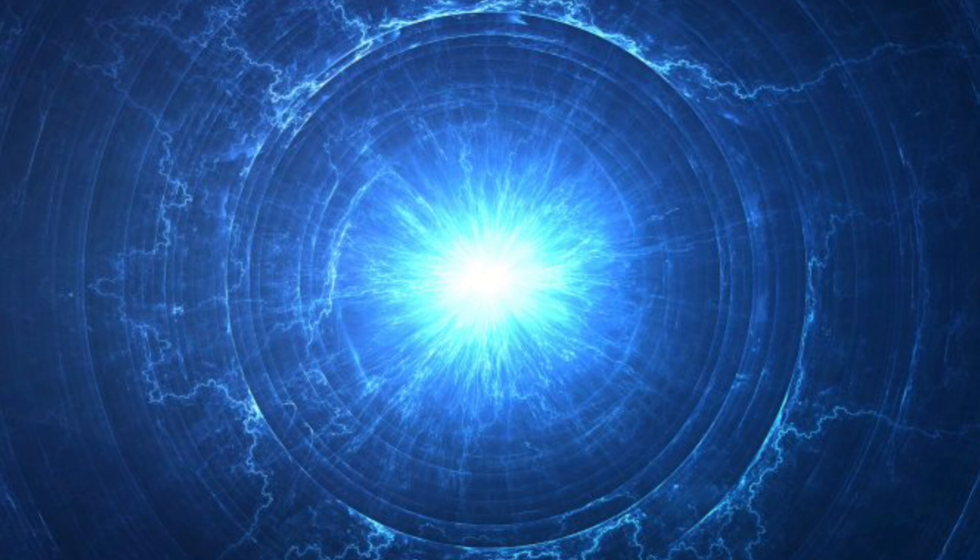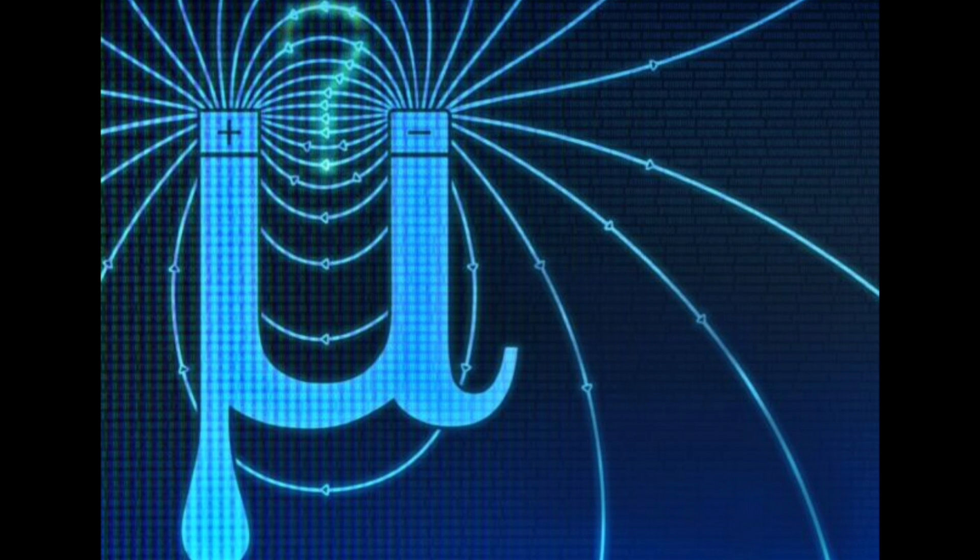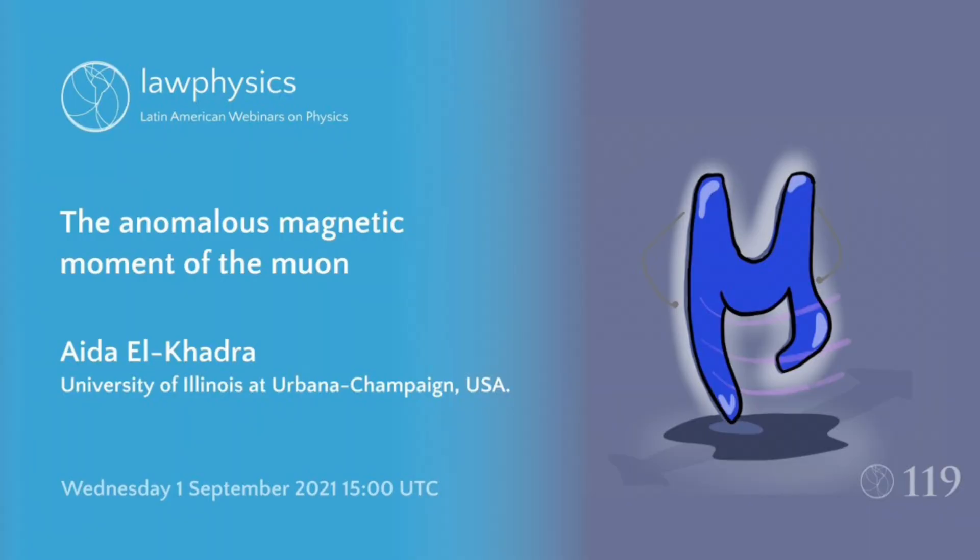The muon g-2 anomaly refers to the discrepancy between the experimental measurements and theoretical predictions of the muon's magnetic moment. The standard model, which is the prevailing theory in particle physics, provides a precise prediction for the muon's magnetic moment.